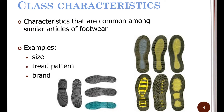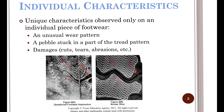Some of the class features of this kind of evidence include the size of the shoe — lots of people have a size 10 or a size 5 shoe. We can also look at tread pattern: if Nike puts out a specific shoe, like Nike Shocks, they made tons of them and they all had the same overall look on the sole. Brand is also definitely a class feature — lots of us own certain brands, and you're going to find tons of people who have the same shoe as you.